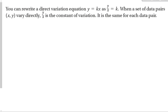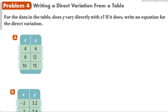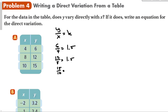When a set of data pairs (x, y) varies directly, y over x is the constant of variation and it is the same for every data pair. For the data in the table, does y vary directly with x? Check: 6 over 4 equals 1.5; 12 over 8 equals 1.5; 15 over 10 equals 1.5. All data points give a constant of variation of 1.5, so the equation is y equals 1.5x.